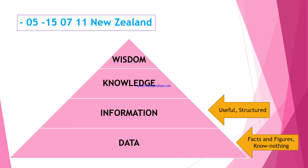When data is processed and converted into a meaningful thing, it is called information — something that is useful and in a structured format. For example, when I get the information that minus 05 and minus 15 stand for a temperature range, 07 and 11 are related to months, and New Zealand is the name of a country — the data is getting converted into a meaningful thing. That is what we call information.